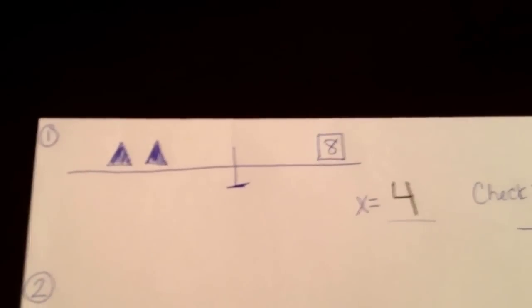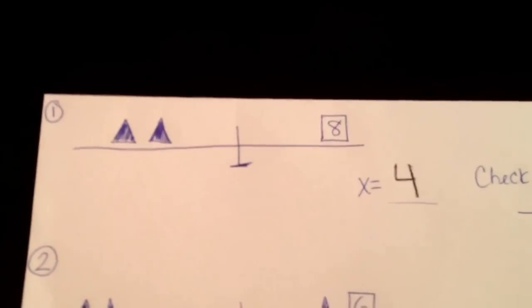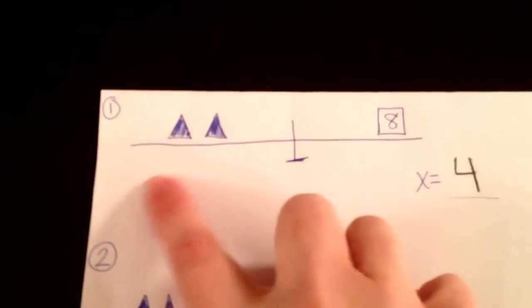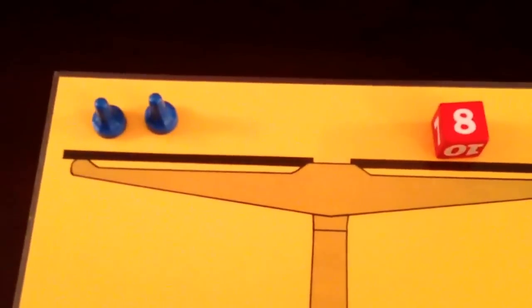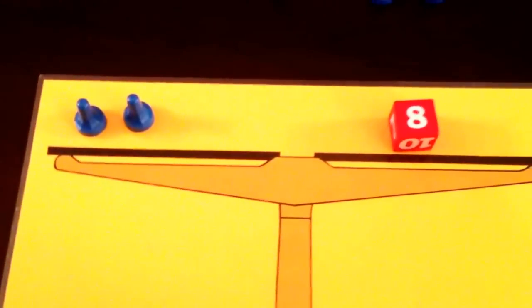Now for each problem that we do, we're also going to check it. And the way that we check it is we go back to the original equation the way it's written, or the way it's represented here with our pieces. And if each pawn is equal to 4, which is what we found out as our solution,